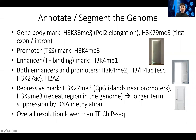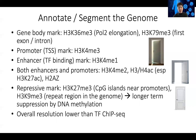H3K36 trimethylation is a mark that polymerase leaves as it transcribes a gene, and this helps polymerase know where to start transcription and where to slow down. K36 trimethylation is usually stronger on the exons and slightly lower in the introns. As polymerase goes across the gene toward the later part, K36 signal is stronger — likely because polymerase starts transcription faster and then moves slightly slower.